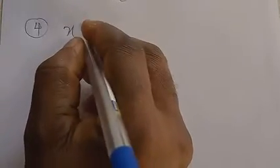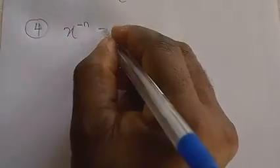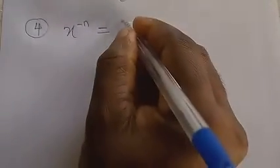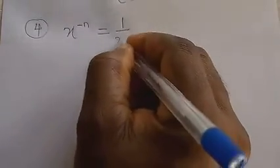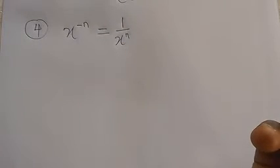Law number 4: x raised to power minus n equals 1 over x raised to power n. That's correct, but let's break it down to understand where it comes from.